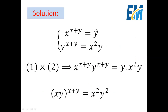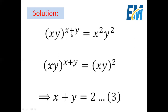We can first multiply equation one by equation two. Then we get x to the power x plus y, multiplied by y to the power x plus y, equals y multiplied by x squared y. Since they have the same powers, this can be written as (xy) to the power x plus y. And the right-hand side equals x squared y squared, so (xy) to the power x plus y equals x squared y squared. But x squared y squared equals (xy) squared, so (xy) to the power x plus y equals (xy) to the power two.